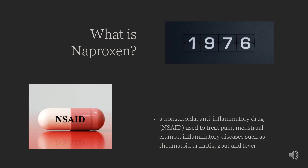Naproxen was approved for medical use in the United States in 1976. It is available over the counter and as a generic medication. In 2020, it was the 91st most commonly prescribed medication in the United States, with more than 8 million prescriptions.